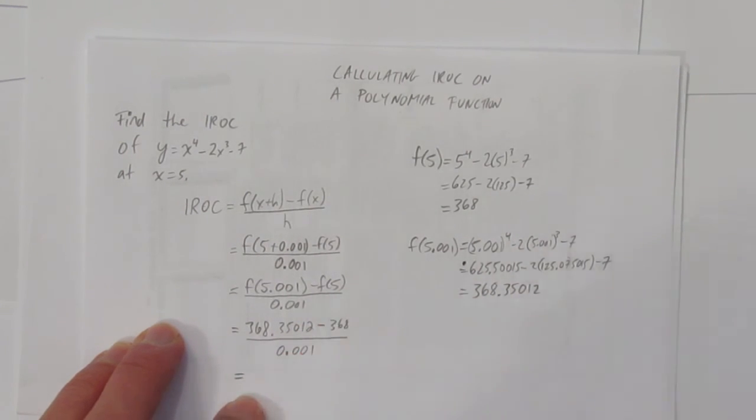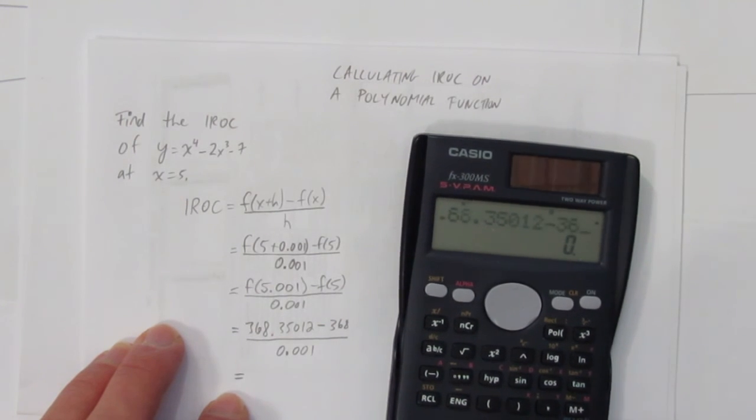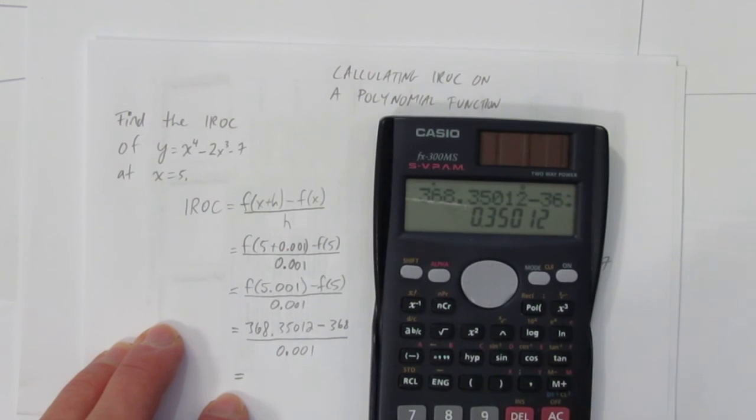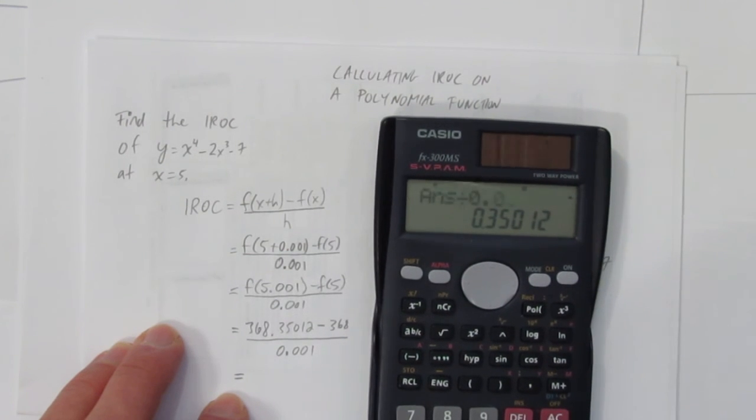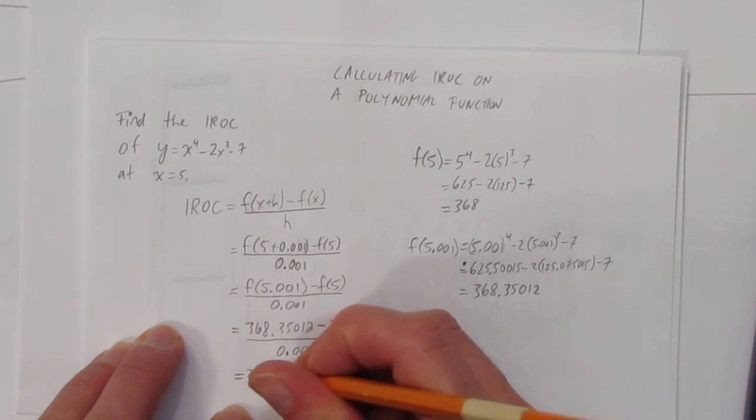And we can do that all at once in our calculator. What's 368? It might be obvious to you what that subtraction is going to work out to be. Take away 368, obviously, just leaves the decimal. And then divide by 0.001. You can just move the decimal three places, and we get 350.12.